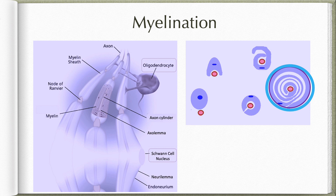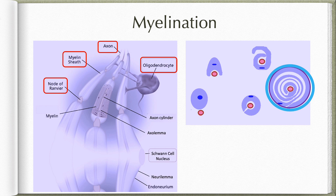In a myelinated nerve fiber, each axon is surrounded by short segments of myelin sheets, which help in insulation. Between two adjacent myelin sheet segments there is a node of Ranvier. This myelination is done by oligodendrocytes in the central nervous system, each oligodendrocyte myelinating 50 to 100 nerve fibers, whereas myelination is done by Schwann cells in the peripheral nervous system, where each Schwann cell myelinates only a single nerve fiber.